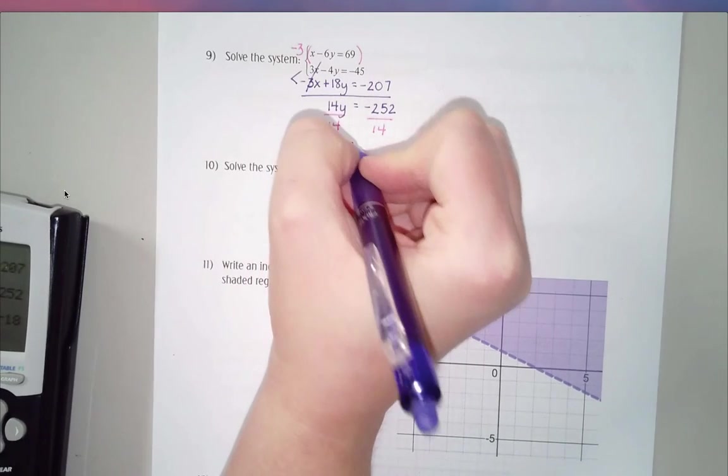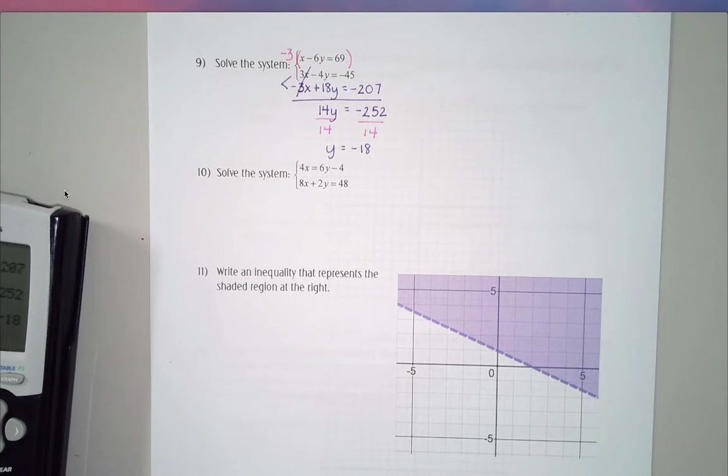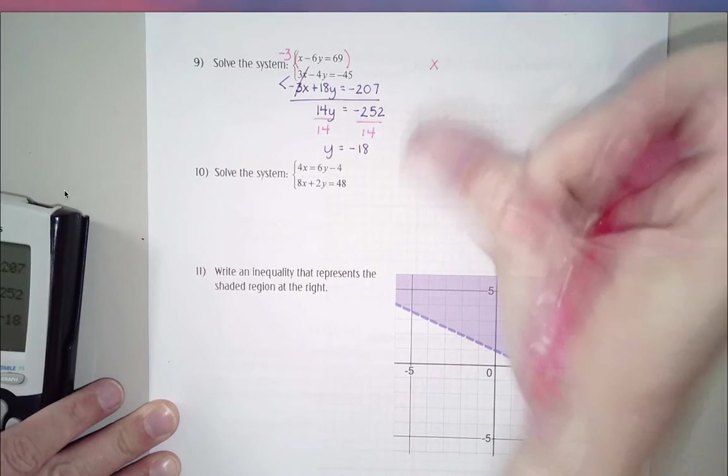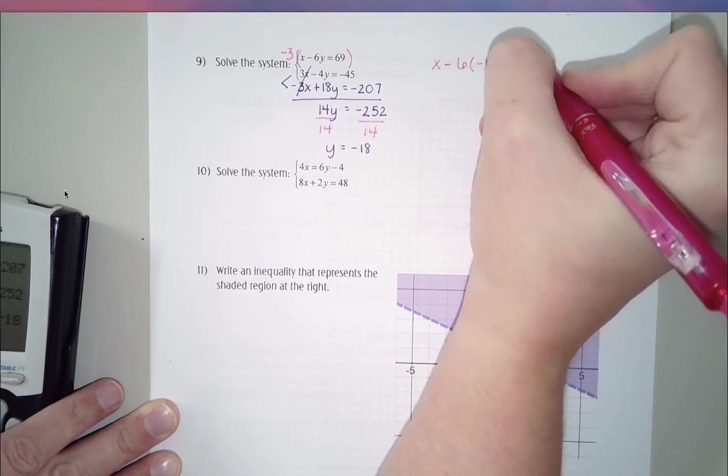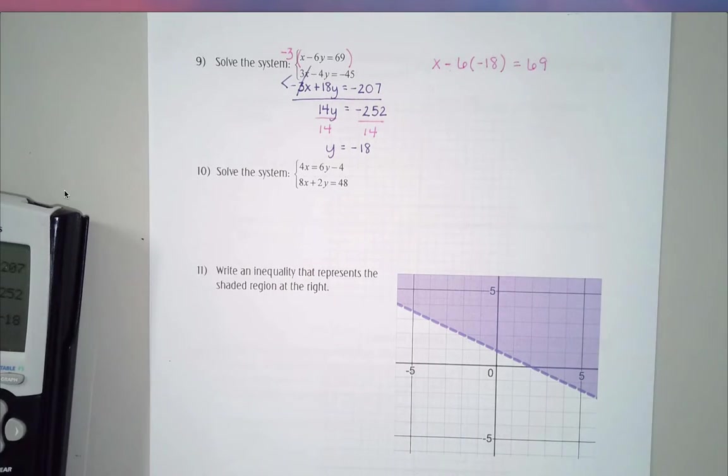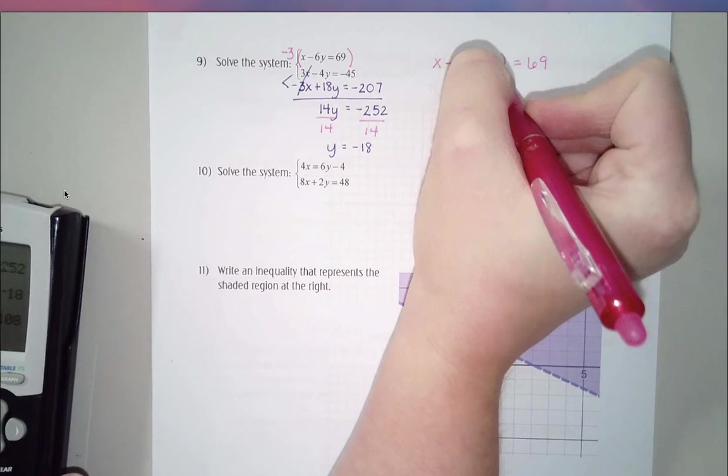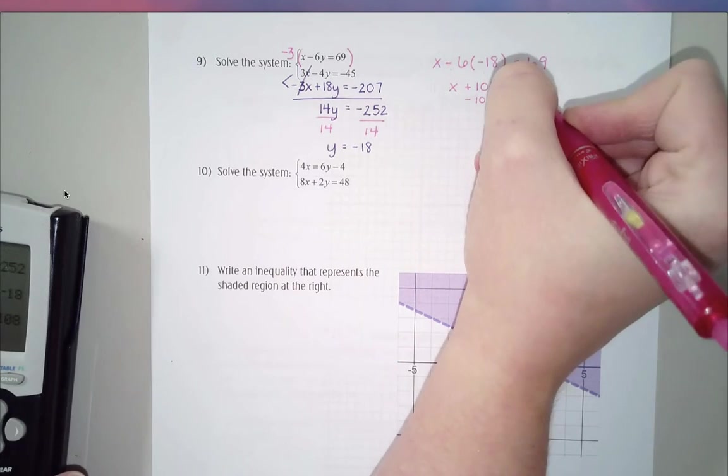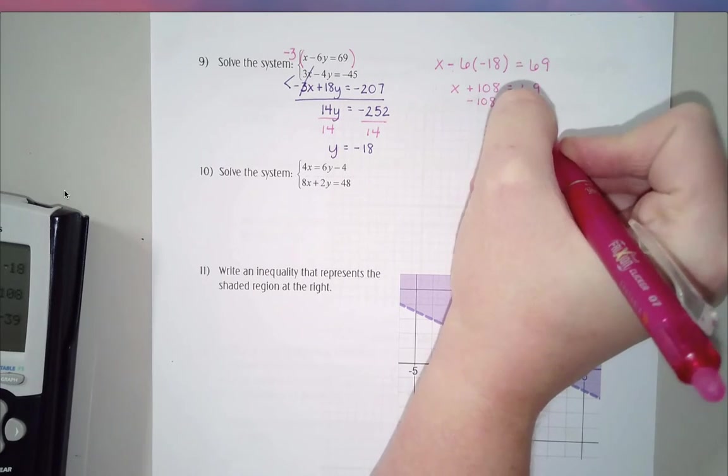And then I'm going to come along and divide by the 14, and I end up with negative 18. So y equals negative 18. And then I've got to go back and figure out what the x value would be. So I'm going to plug this into that very top equation. x minus 6y, so I'm plugging in negative 18, equals 69.